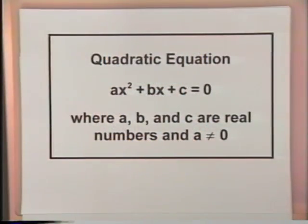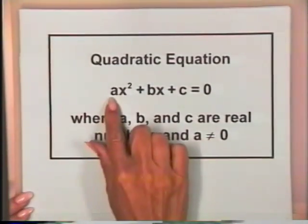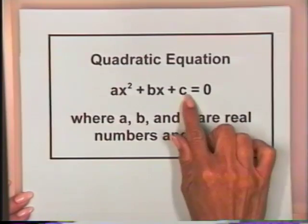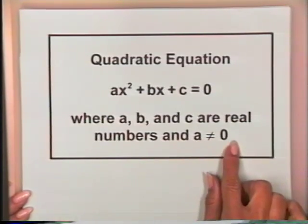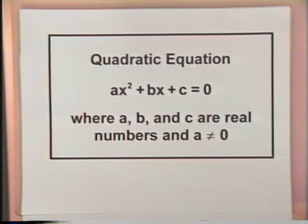In this lesson, we will take equations that are not quadratic equations and write them in quadratic form. Then we may solve them using our quadratic methods. I'd like to begin by reviewing the definition of a quadratic equation in the variable x. An equation that can be written in the form ax squared plus bx plus c equals 0, where a, b, and c are real numbers and a does not equal 0, is said to be a quadratic equation in the variable x.